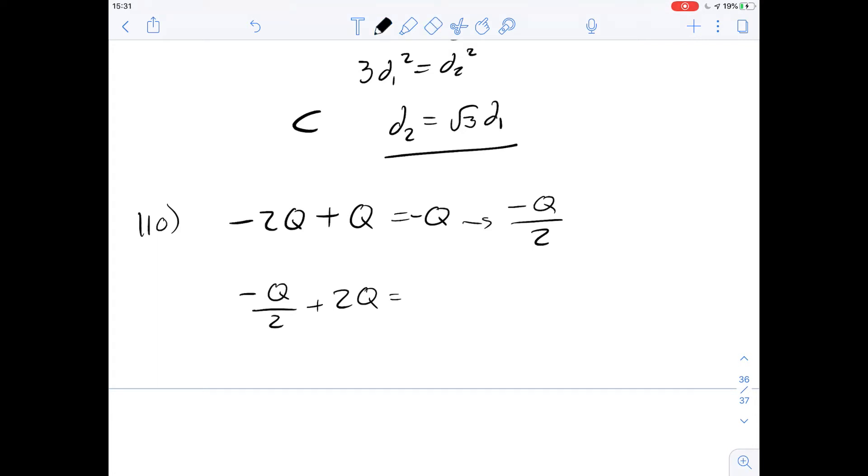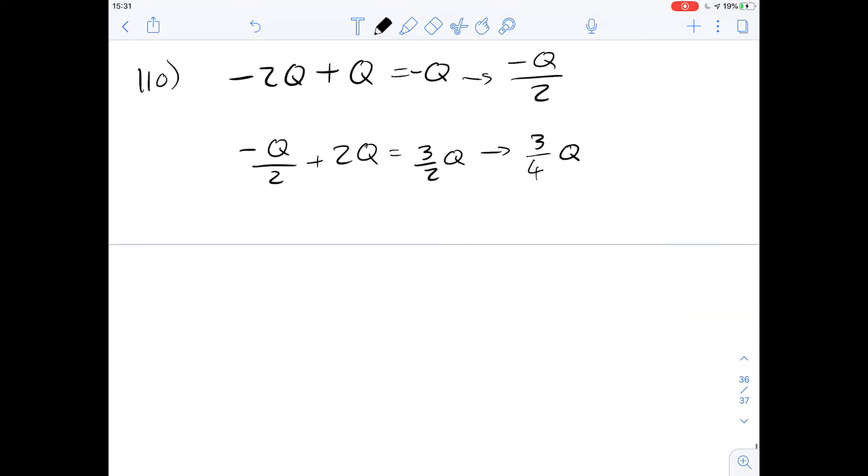1.5q which is 3 over 2q and that's going to be spread between both of them. They're both going to have 3 over 4 coulombs of charge then.